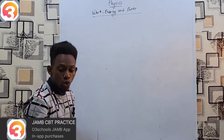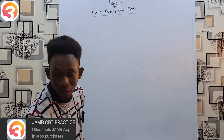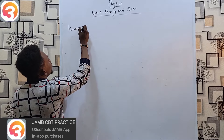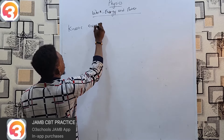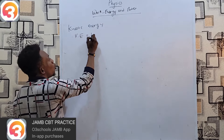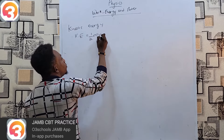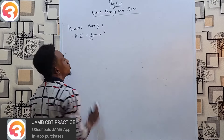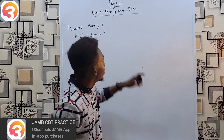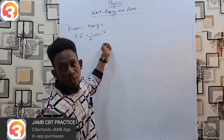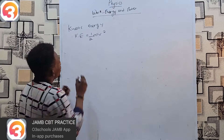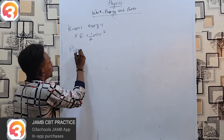Kinetic energy is the energy possessed by a moving body — the energy you have courtesy of your motion. Its formula is KE = ½mv², that is one-half times mass times the square of velocity.